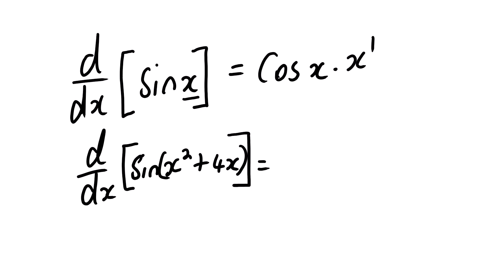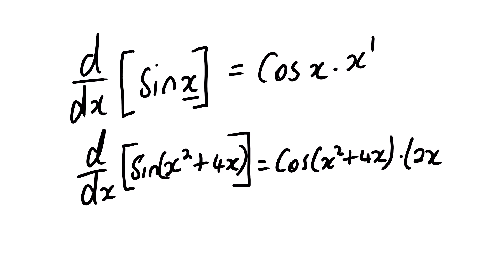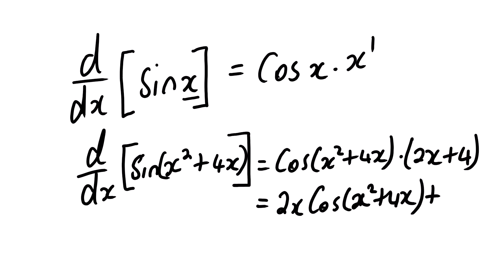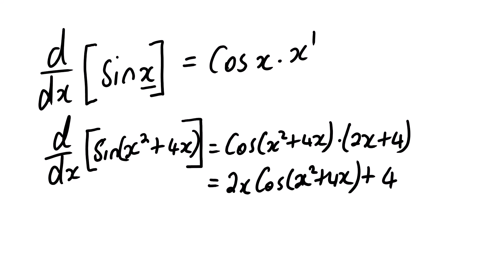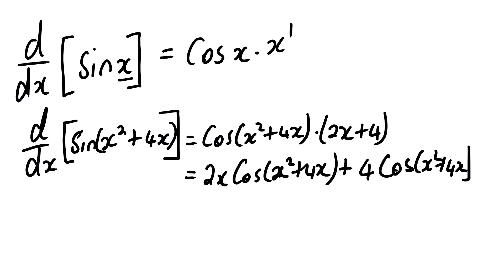The derivative of sin(x² + 4x) is cos(x² + 4x) multiplied by the derivative of x² + 4x. The derivative of x² is 2x and the derivative of 4x is 4. So you are going to have 2x cos(x² + 4x) plus 4 cos(x² + 4x). Or you can leave it there.